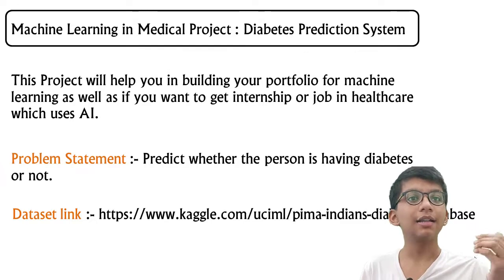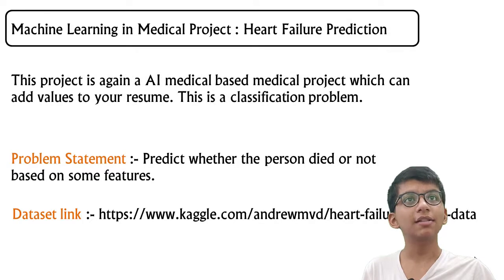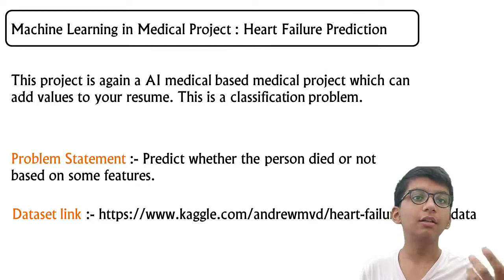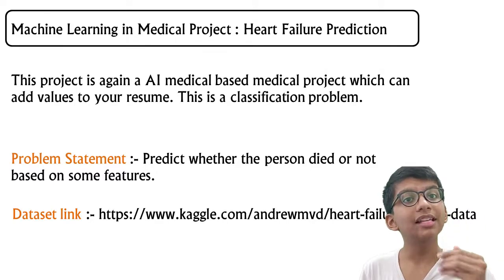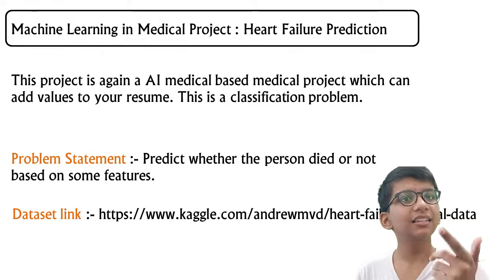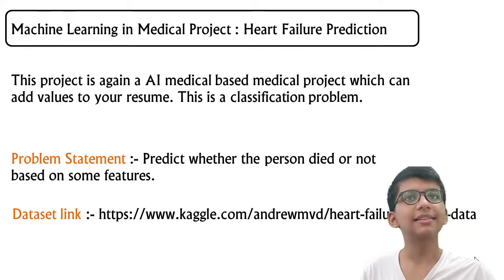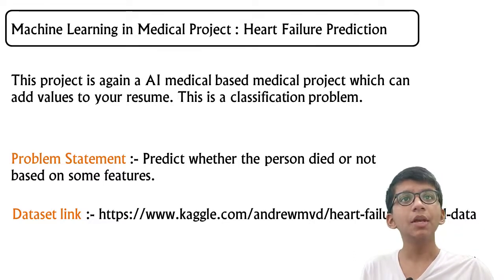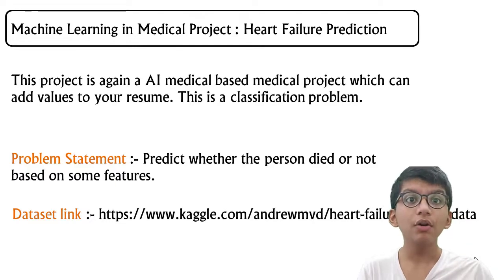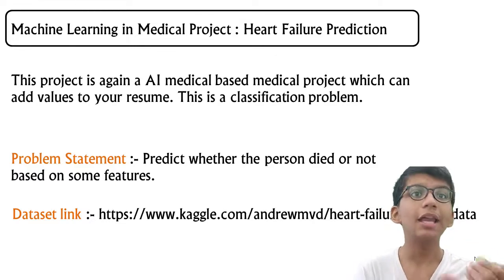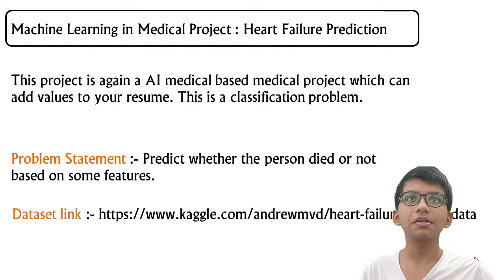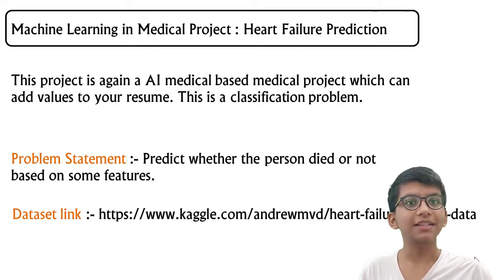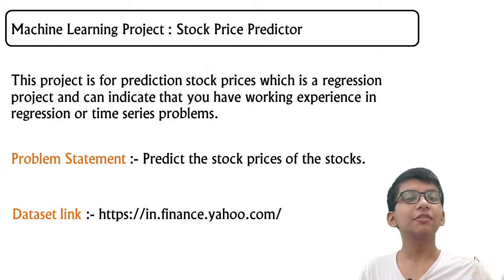The second project is also a medical project: a heart failure prediction system. This is again an AI and medical project showing you can work in healthcare and have experience with classification problems. The dataset link is in the PDF in the description. You have to predict whether a person died or not based on 13 to 14 features, and you can add more features using interaction terms.